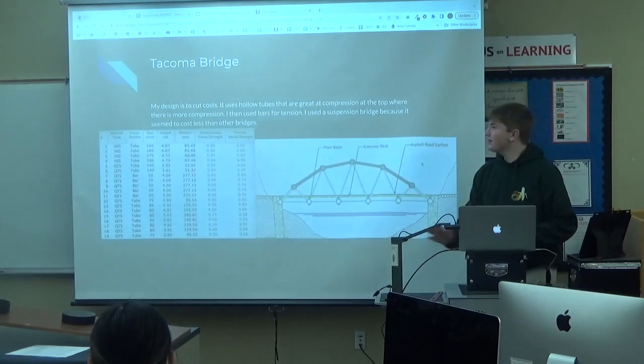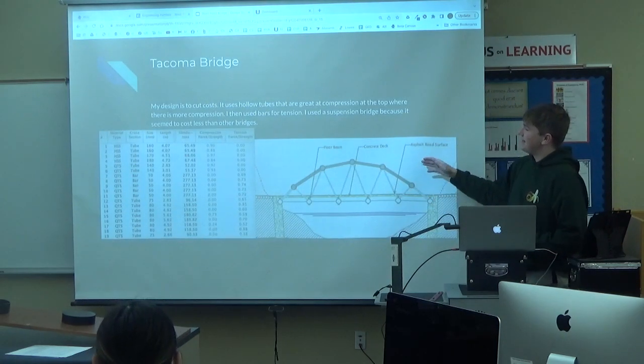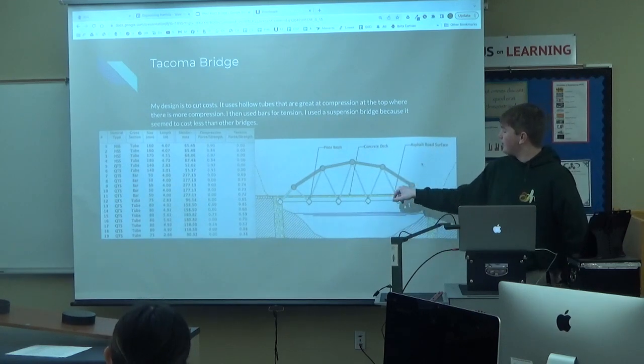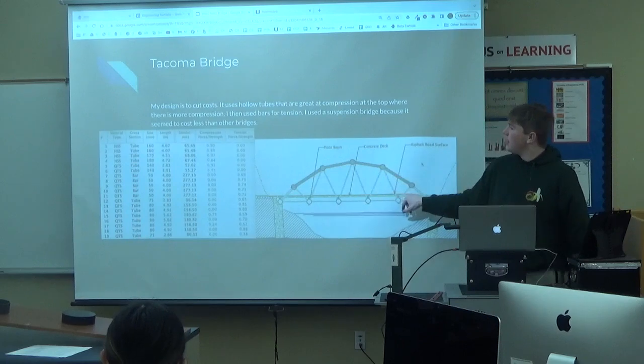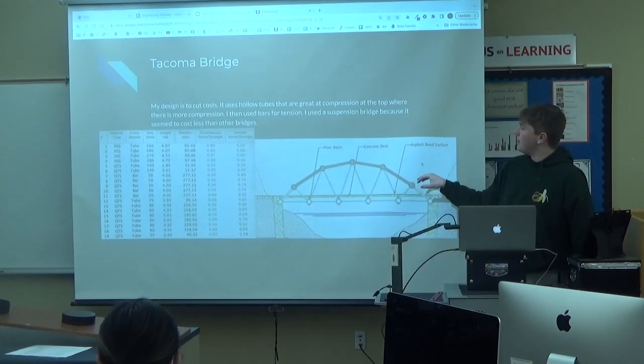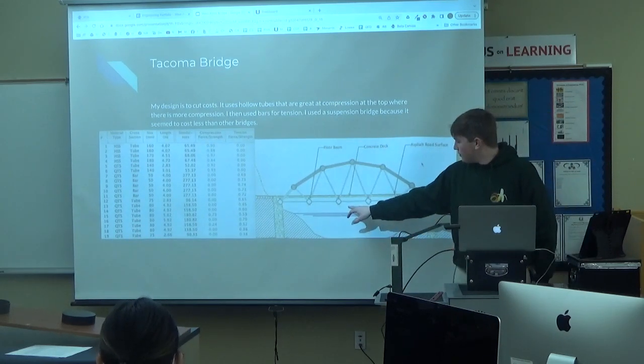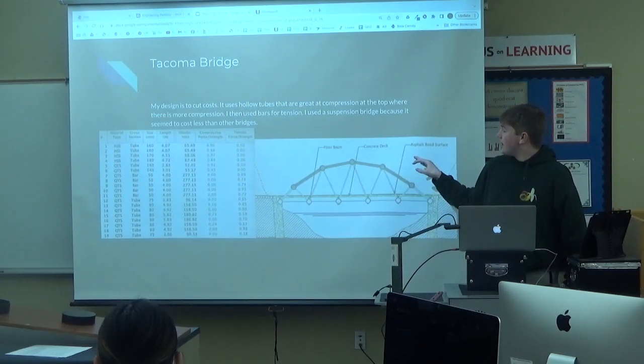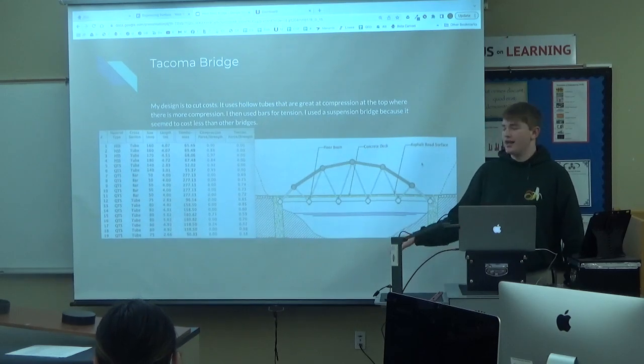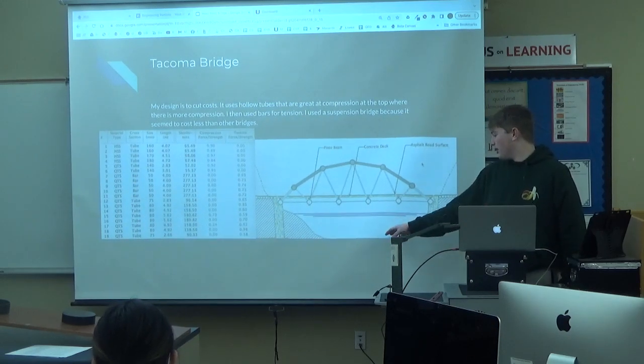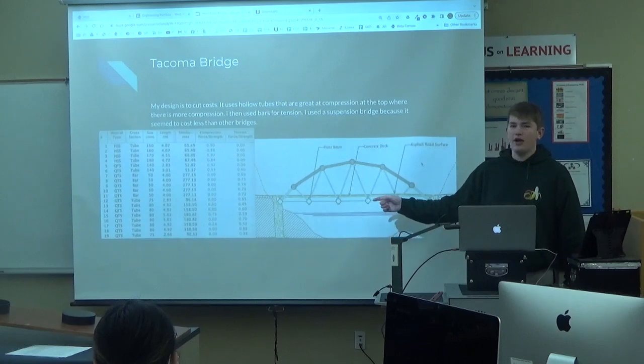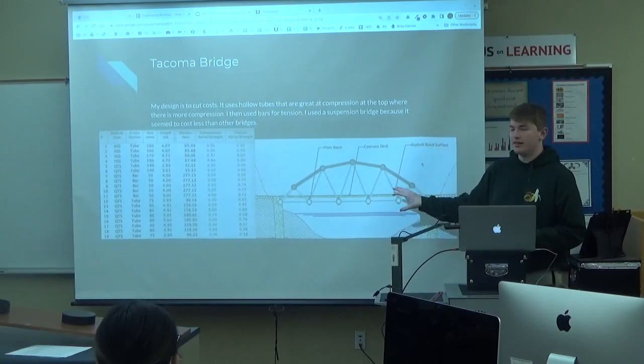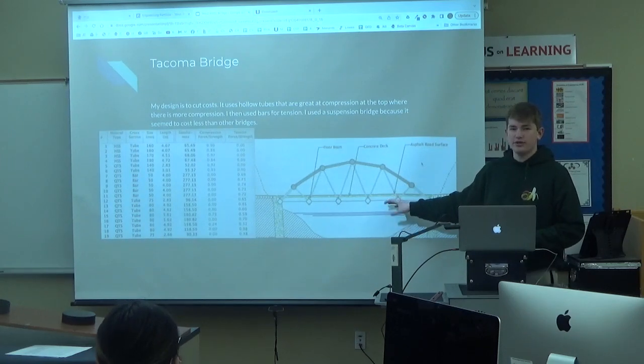And then, here's the Tacoma bridge. My design is to cut out costs and use hollow tubes that are great at compression at the top where compression is, where there's more compression. And then I use bars for tension, and I use a suspension bridge because it costs less, and I didn't have to use cable anchorages. I also decided to spend more on excavation, so I had to spend less on the actual materials in building it.